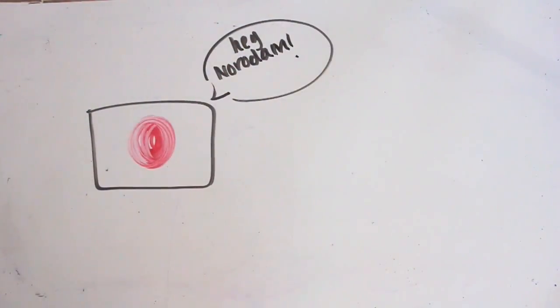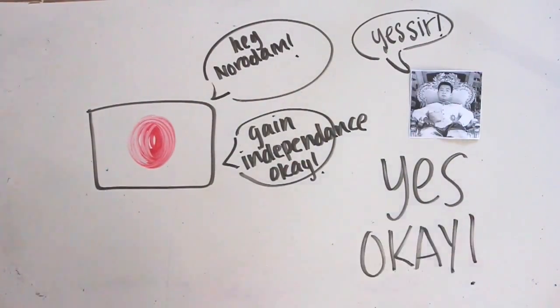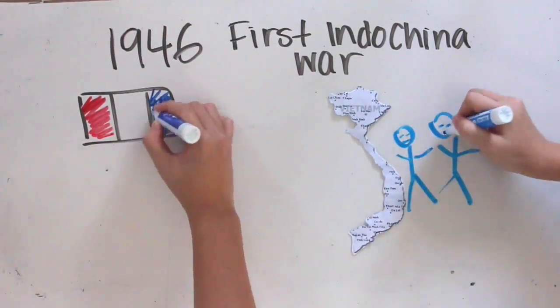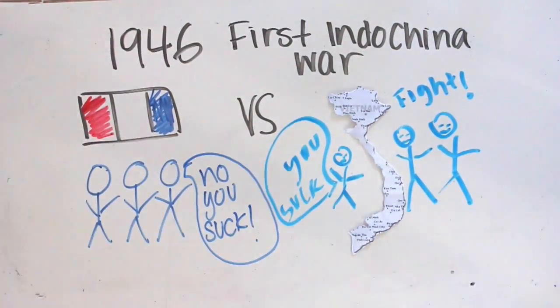But the Japanese encouraged King Norodom Sihanouk to fight for Cambodia's independence. Due to national disputes, in 1946, the First Indochina War began. The main battle was between the Vietnamese and the French.